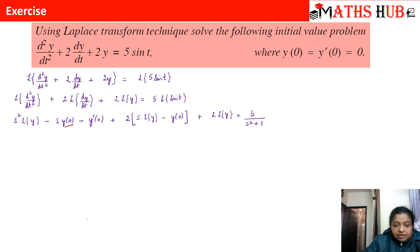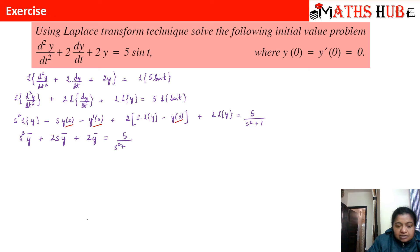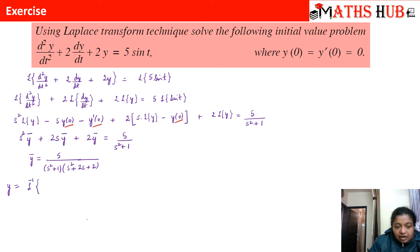Substituting y(0) = 0 and y'(0) = 0, and letting L{y} = ȳ, we get s²ȳ + 2sȳ + 2ȳ = 5/(s² + 1). Collecting ȳ: ȳ(s² + 2s + 2) = 5/(s² + 1), so ȳ = 5 / [(s² + 1)(s² + 2s + 2)]. Therefore y = L⁻¹{ 5 / [(s² + 1)(s² + 2s + 2)] }. We use partial fractions to split this.